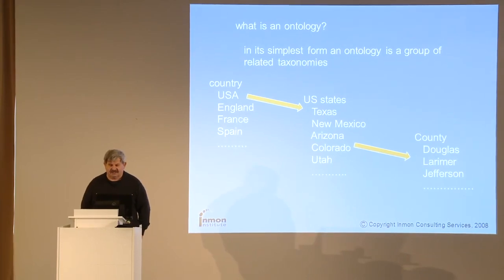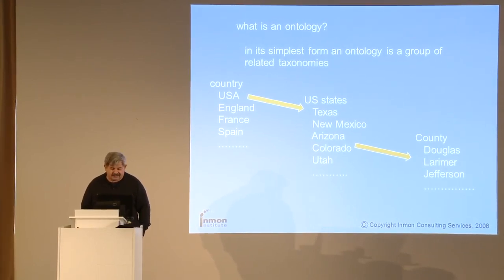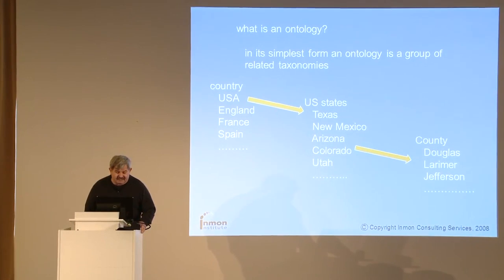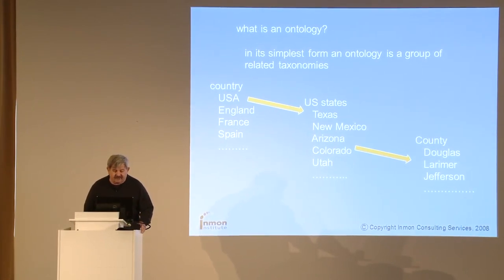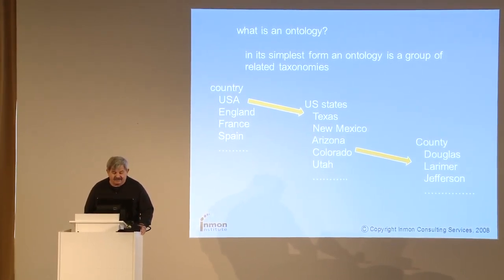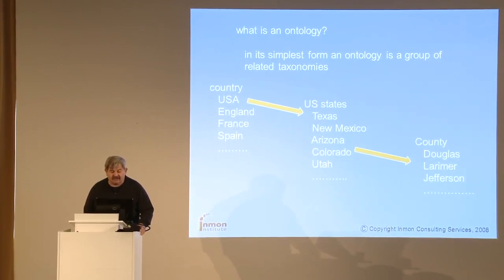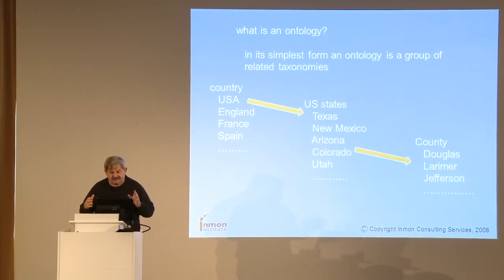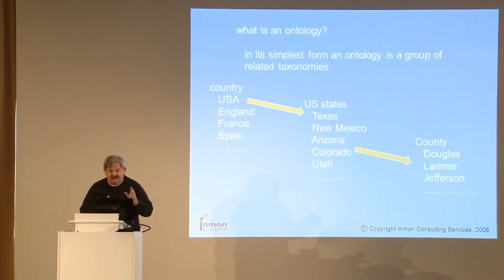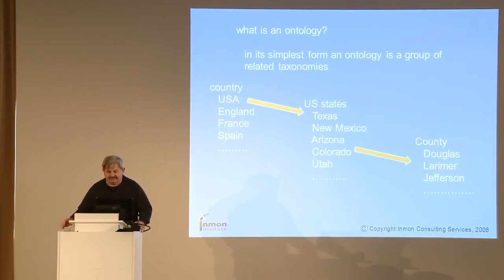What is an ontology? Here we have countries: USA, England, France, and Spain. One of our countries, the USA, has states of Texas, New Mexico, Colorado, and Utah. And Colorado has counties known as Douglas County, Larimer County, Jefferson County, and so forth. We start to see relationships among the taxonomies. An ontology is a taxonomy for which there is a relationship among the words in the taxonomy.